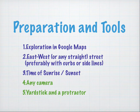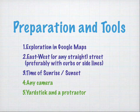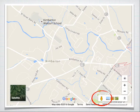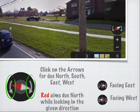Preparation and tools. We're first going to do some explorations in Google Maps. What you're looking for is an east-west street or any straight street in your neighborhood, preferably with curbs or sidelines. You want to be able to see a clear view of the sunrise and sunset from this location. In Google Maps, you have the little street view guy which you can drag onto the map, and all the streets available are glowing in blue. Then you can take a look at the photos and see if you have a good view of the horizon. You can click on the left and right arrows to align the compass.